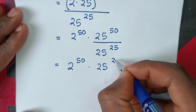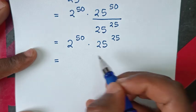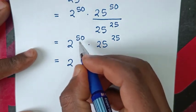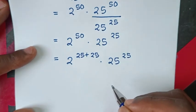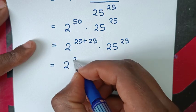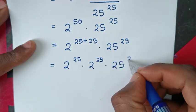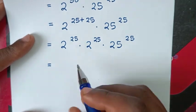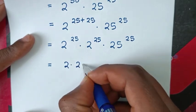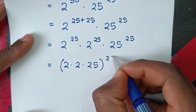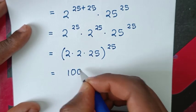So 50 minus 25 equals 25. We now have 2^50 times 25^25. Since 2^50 equals 2^(25+25), we can write it as 2^25 times 2^25. Multiplying the bases together: 2 times 2 is 4, and 4 times 25 is 100. So we get 100^25.